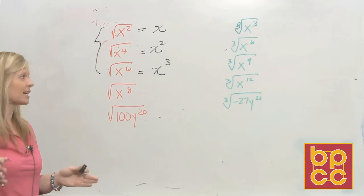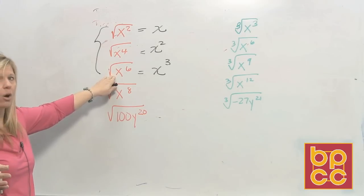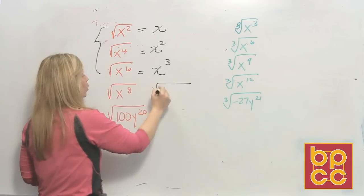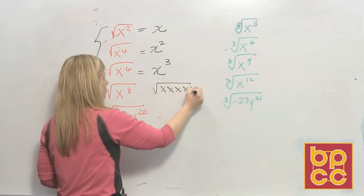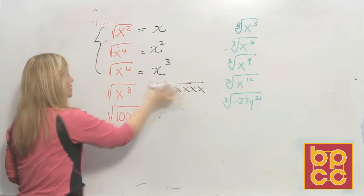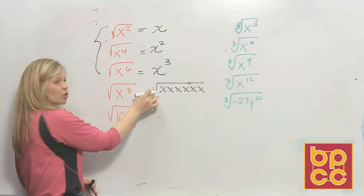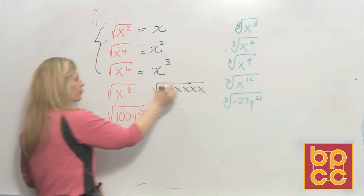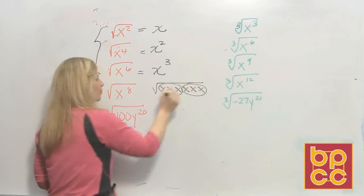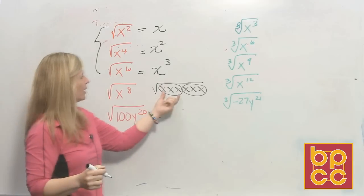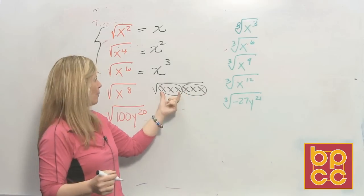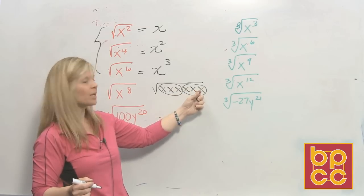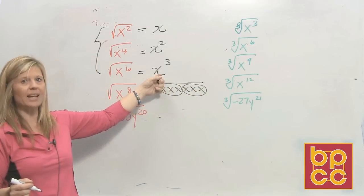That goes back to understanding definitions. If I made you work out x to the sixth the long way, you would physically have a square root symbol with six x's in it. This represents x to the sixth. When I ask you to square root, I'm saying something times itself — make groups of two. So do you agree this group and this group are exactly alike? Three x's here and three x's here. x cubed times x cubed is x to the sixth — that's where you get the answer.